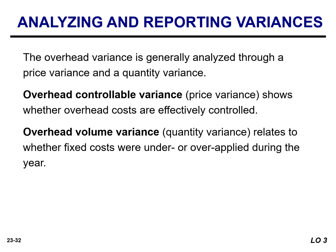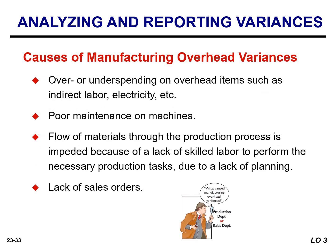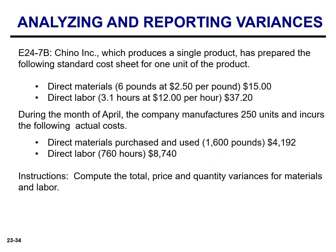The overhead variance is generally analyzed through a price and quantity variance. The name usually given to the price variance is the overhead controllable variance, and the quantity variance is referred to as the overhead volume variance. These computations are discussed in more detail in advanced courses as well as in the appendix. Generally, the responsibility for the manufacturing overhead variances rests with the production department. I selected this exercise because you will be calculating both the materials and the labor variances. The solutions will be provided in the next video.